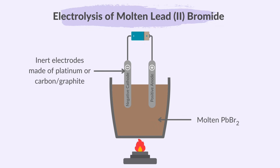Remember, molten compounds are substances in a liquid state resulting from being heated above their melting points. When a compound is molten, it has free ions that can carry charge during electrolysis. Connect the electrodes to the power supply and observe the reactions.